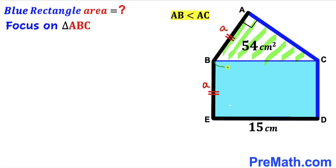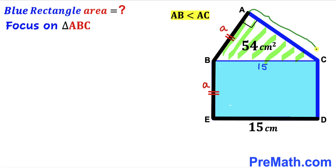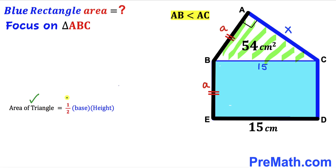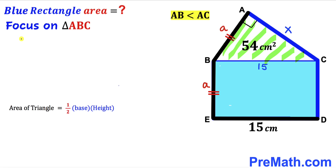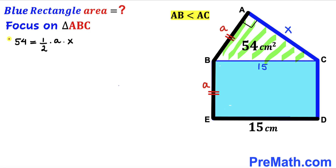Now let's focus on right triangle ABC. We know this BC side length is going to be equal to the DE length — if DE is 15 centimeter, then BC is 15 centimeter as well. I'm going to label the AC side as X. Recalling the area of a triangle formula: area equals one-half times base times height. In our case the base is lowercase a and the height is X, and the area is 54, so we write: 54 = (1/2) × a × X.